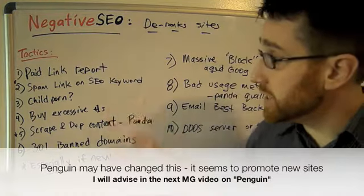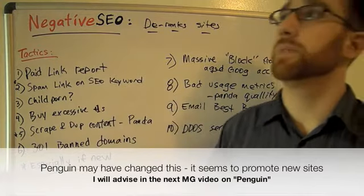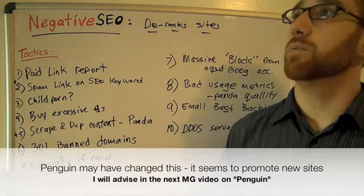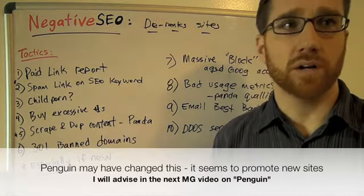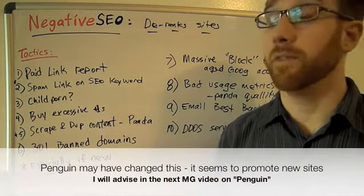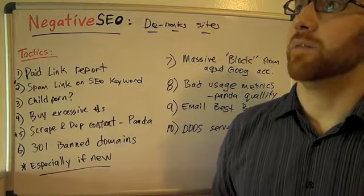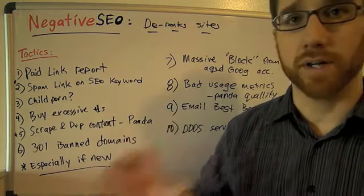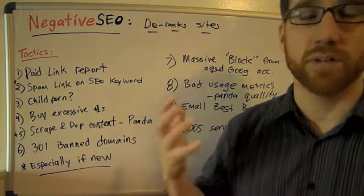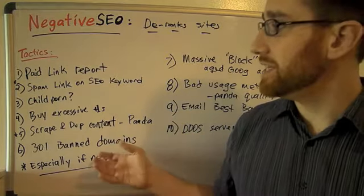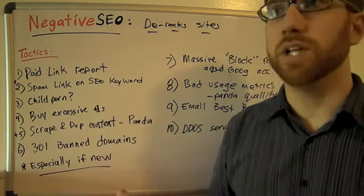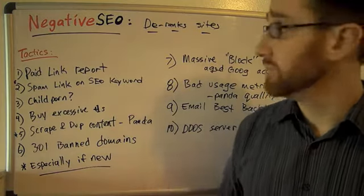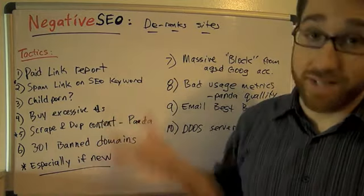All of this works especially well if the site is new — say, under nine months of age. You might ask why you'd want to attack such a young site. The answer is, it's like King of the Hill. Why would you let them get some strength first before knocking them down? If you have competitors coming up in your niche, you want to take care of them before they have enough strength to fight back. Brutal, but that's negative SEO.